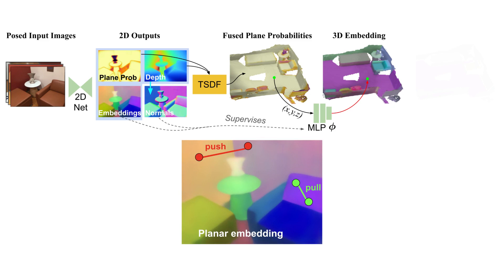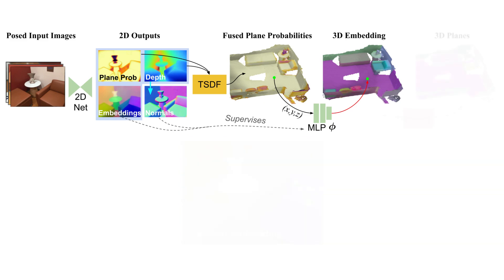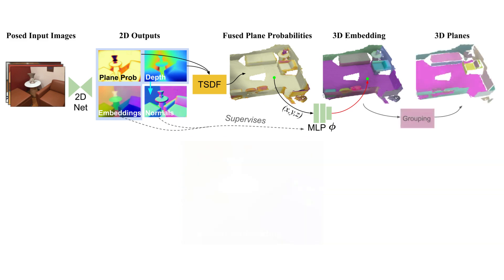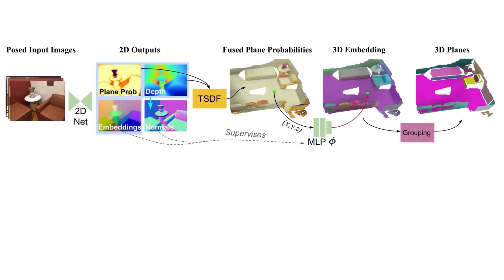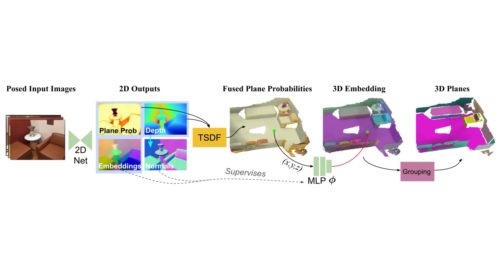The pull term encourages a pair of points with similar 2D embeddings and normals to have the same embedding in 3D, and the push term encourages points with different 2D embeddings and normals to have different embeddings in 3D. Once the per-vertex embeddings are obtained, they are used in a final clustering step, where nearby vertices with similar embeddings are assigned the same plane.